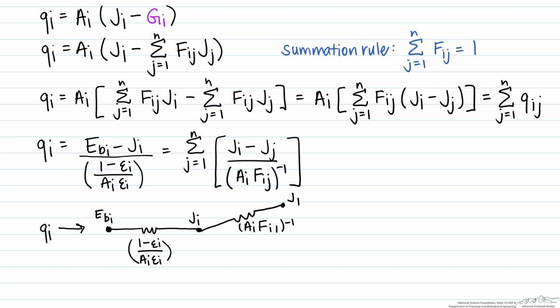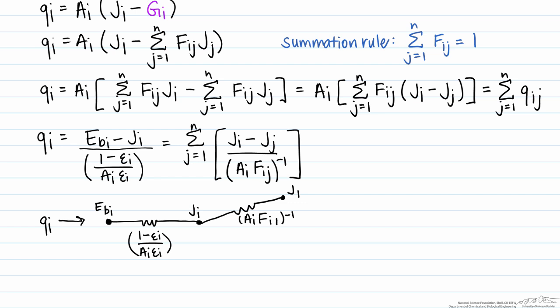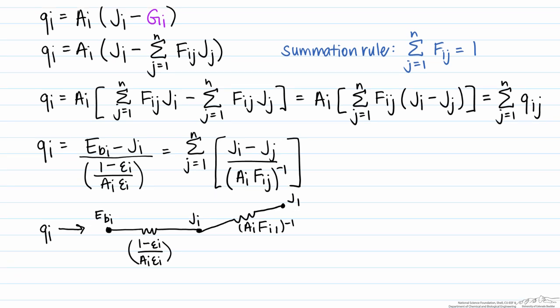And this is J1. We can also look at this as qi,1, or the net rate of radiation transfer from i to surface 1. Now let's look here.